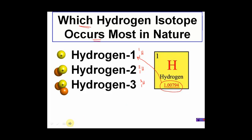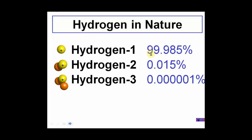Hydrogen-1 occurs 99.9% of the time in nature. Because it is found this much in nature, the periodic table gives this weight of hydrogen-1 the most emphasis on that box in the periodic table. So where you see the letter H at 1.00794, that 1.00794 is simply saying that if this isotope occurs that much in nature, we're going to give the mass a lot of significance in that periodic table box.